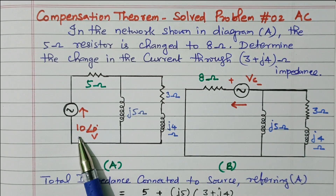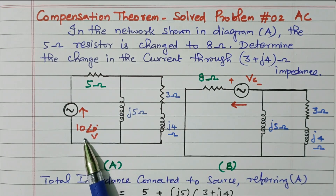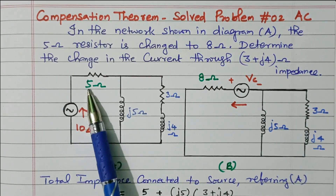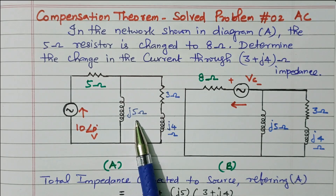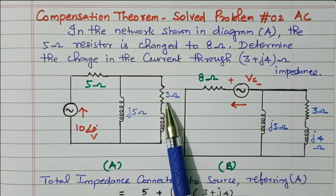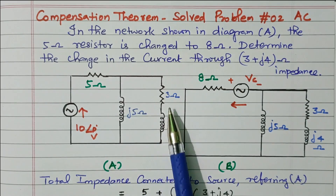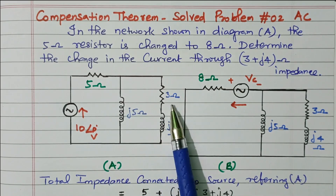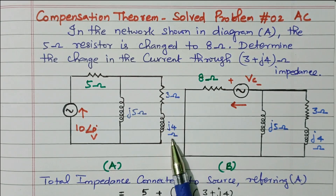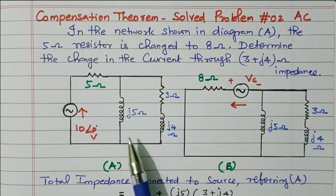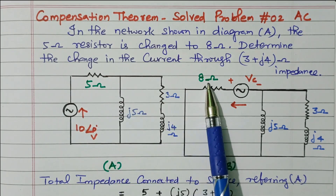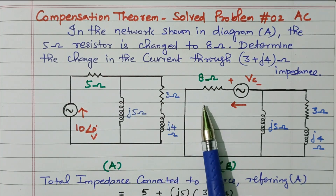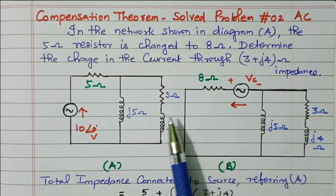A 10 volt with 0 degree voltage source is available, with a 5 ohm resistor and one inductor J5 ohm, and one more resistor and inductor connected in series: 3 ohm and J4 ohm. The problem is that this 5 ohm is now changed to 8 ohm.